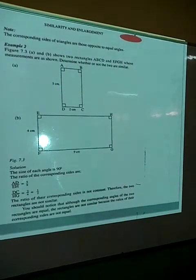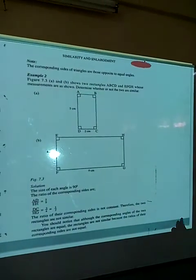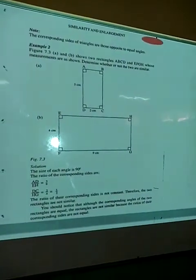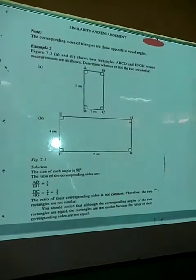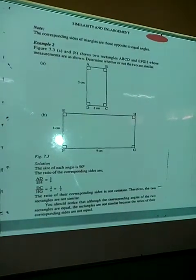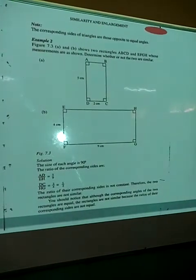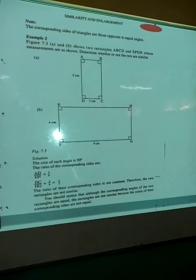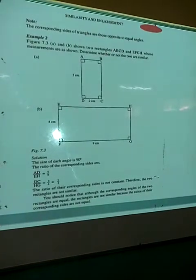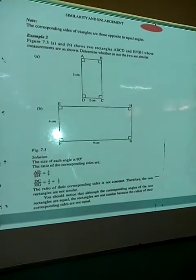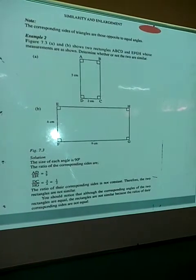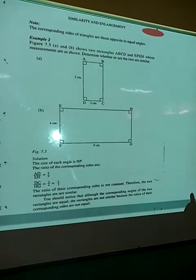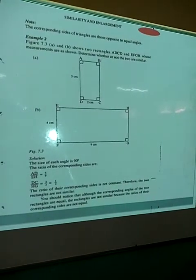Remember, we said that for two figures to be similar, the ratio of the corresponding sides must be the same. Since the ratio of the corresponding sides of these two rectangles are not the same, the two rectangles are not similar. So for two figures to be similar, the ratio of the corresponding sides must be equal, and the angles and sides must correspond — and that now takes us to the topic of enlargement.